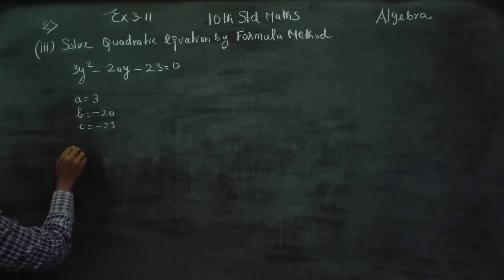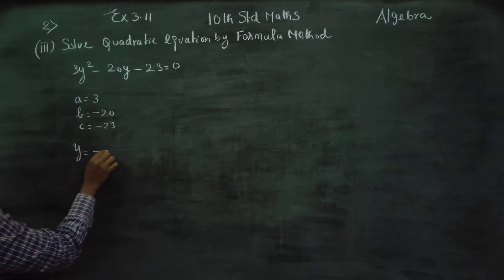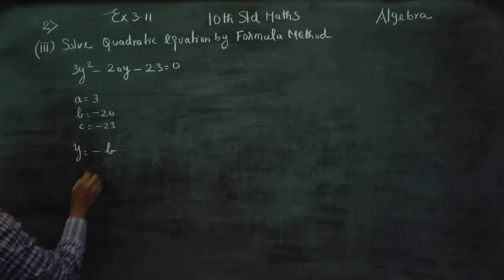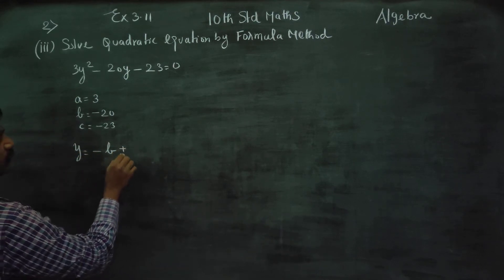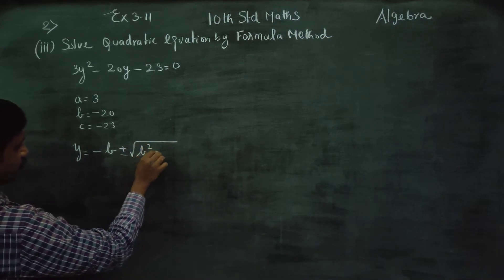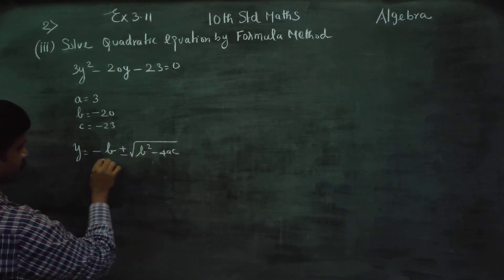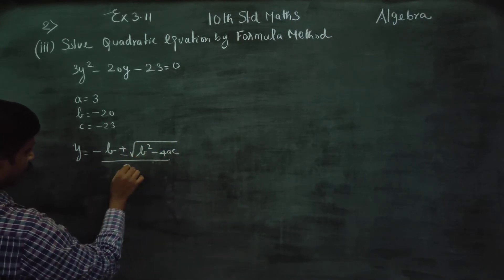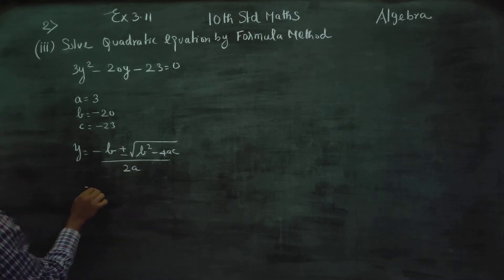After writing this, you have to write the formula. Y is equal to minus B plus or minus square root of B squared minus 4AC, all divided by 2A. This is the quadratic formula method.